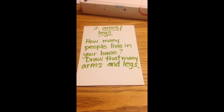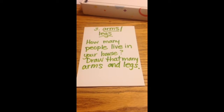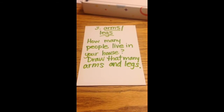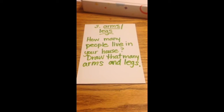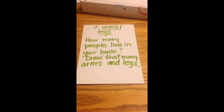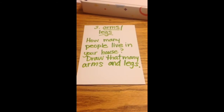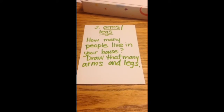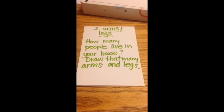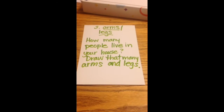Question three — arms and legs: how many people live in your house? Draw that many arms and legs. For example, there are five people that live in my house, so on my picture I drew two arms and three legs for a total of five arms and legs all together.